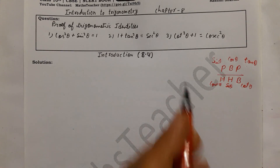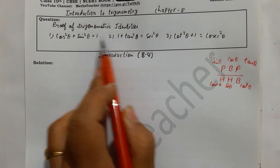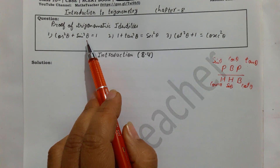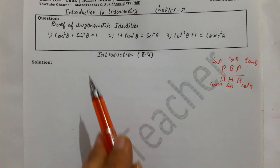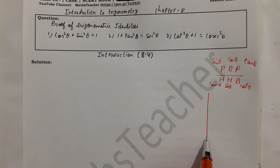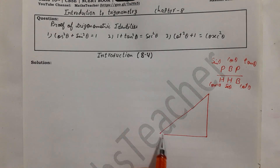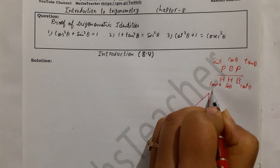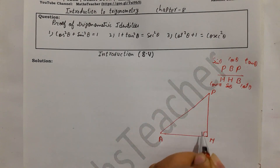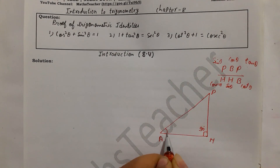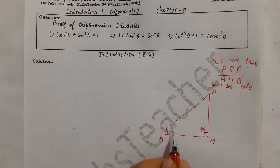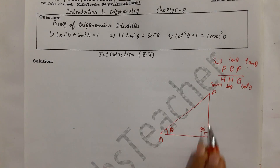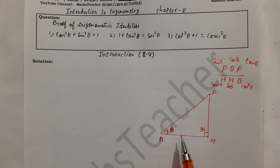To prove these identities, first we make a right angle triangle. We place theta at the base, because in trigonometry the acute angle should always be at the base. One angle is 90 degrees, and angle P is also an acute angle. We name the triangle A, P, M — this is our right angle at M.